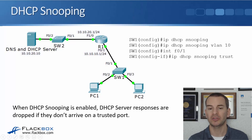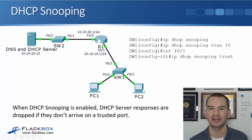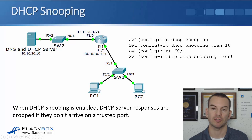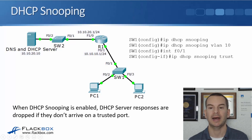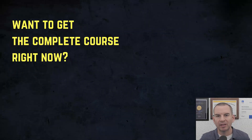The configuration for this — we've done this on switch 1. Globally, you say 'ip dhcp snooping'. You also need to enable it at the VLAN level, so you also say 'ip dhcp snooping vlan 10', for example. Then configure your trusted ports: that's interface fast 0/1 on switch 1, with the command 'ip dhcp snooping trust'. So that is why we have DHCP snooping, what it does, and a quick look at the configuration as well. Thanks for watching.